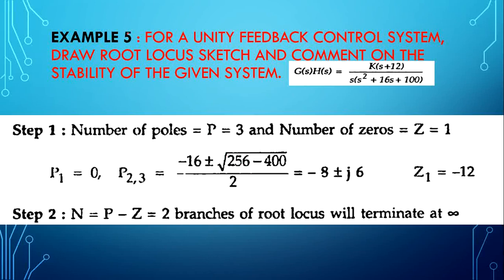This is the fifth example. The given open loop transfer function is K(s+12) / [s(s²+16s+100)]. We have to draw the root locus sketch and comment on the stability. From the denominator polynomial, the quadratic gives two poles at -8 ± j6, and one pole at origin. So we have 3 poles and 1 zero at -12.